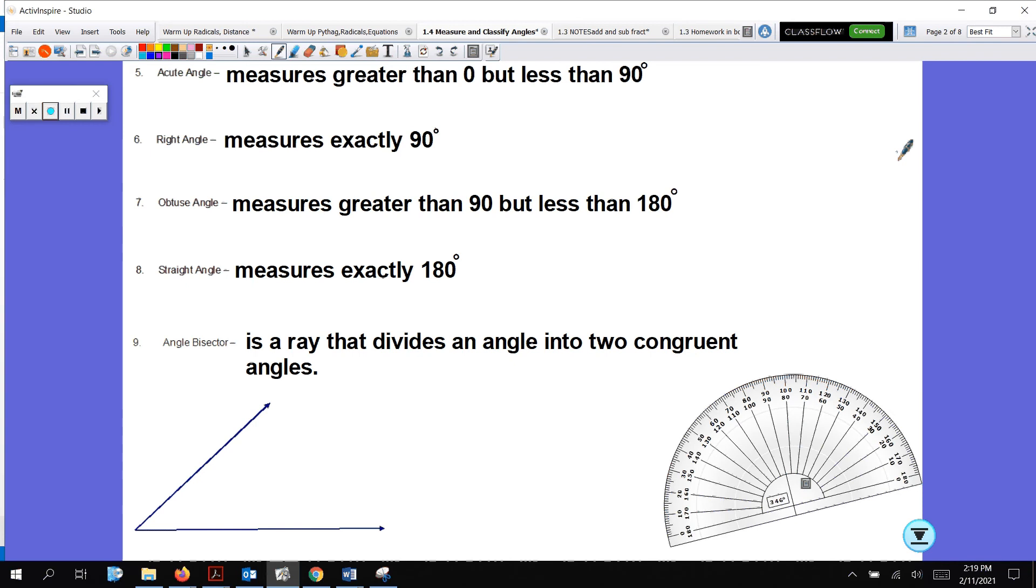Angle bisector. If I have an angle bisector, like look at this little angle I have down here. An angle bisector is a ray that bisects the angle. So if the whole thing was 50 degrees, that means each little angle that it bisects would be 25 and 25. So if I have an angle bisector, it creates two congruent angles. That is important.